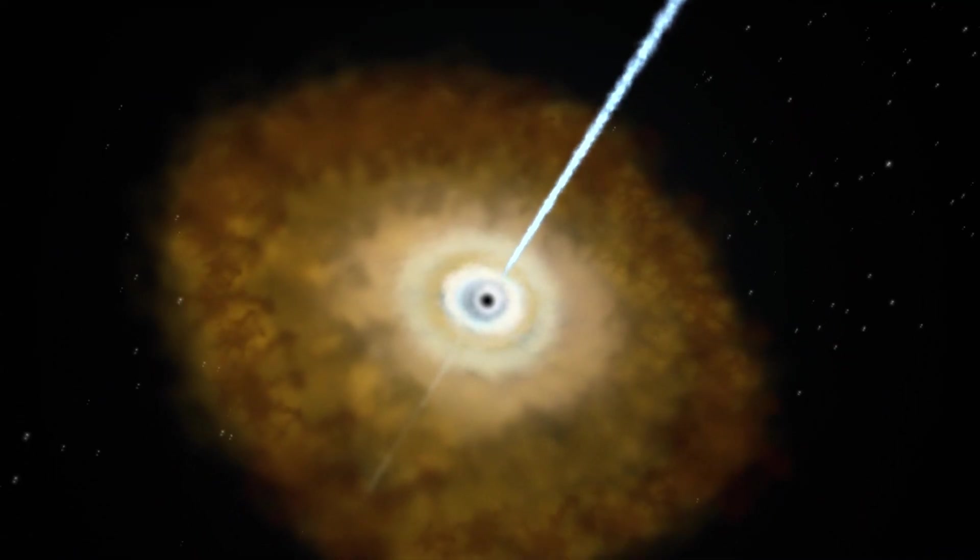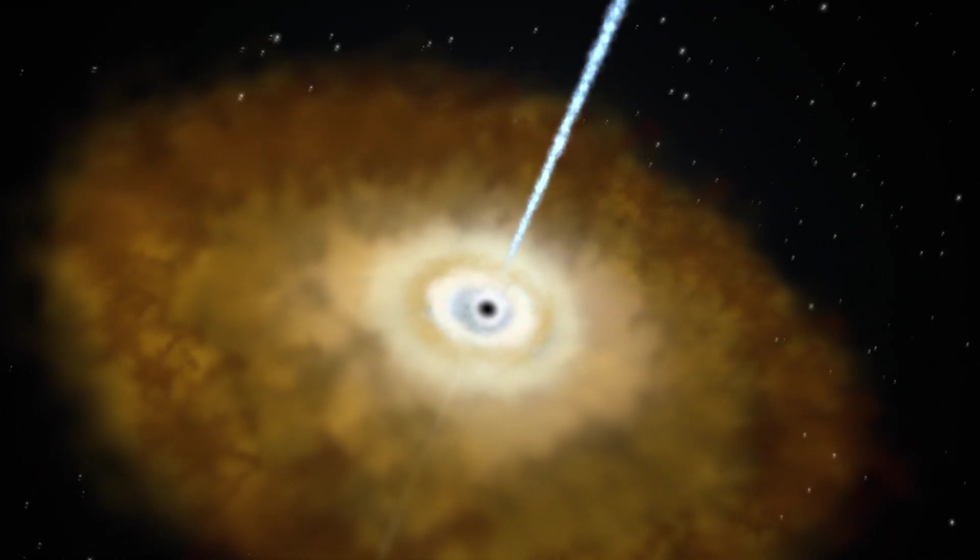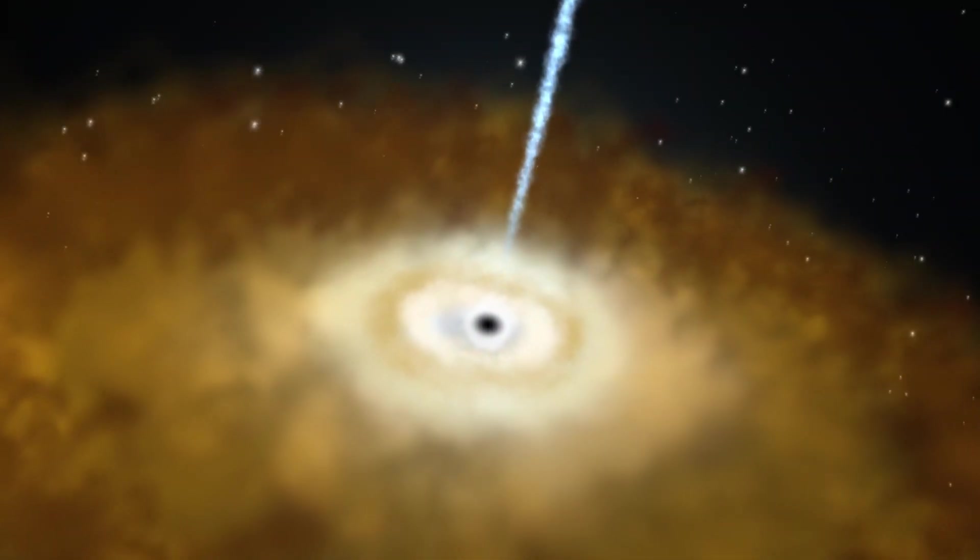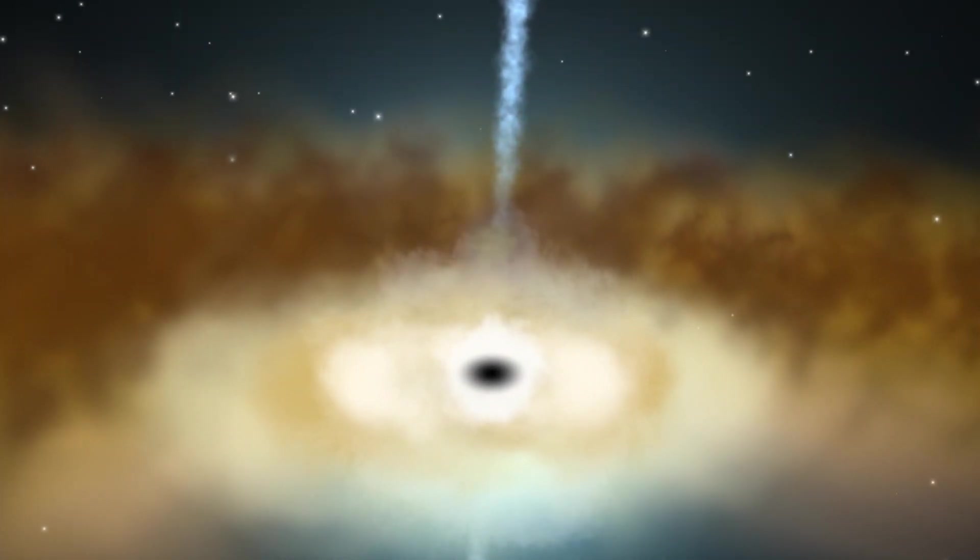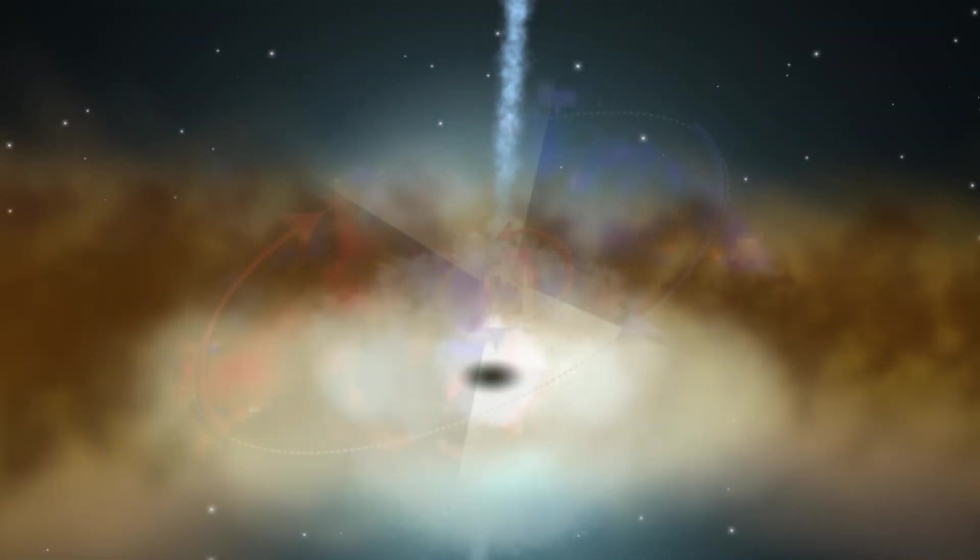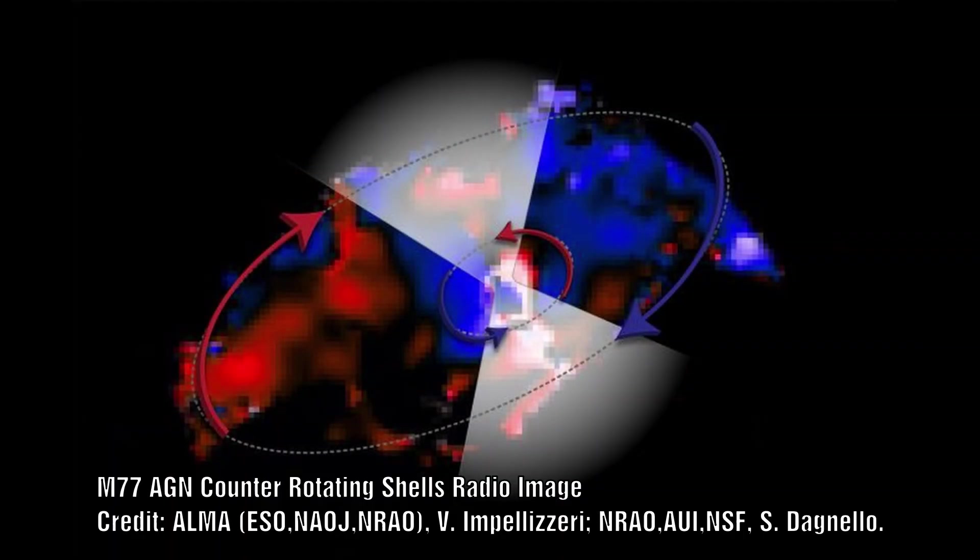On the other hand, if active galaxies are powered by Birkeland currents, then we would expect to find this around all black holes. So hopefully when they start to use this array to image other active galactic nuclei, then we should start to see more counter-rotating shells. And if we don't, then we know which model is the correct one. For now, it is too early to say whether this is a one-off or a common occurrence.